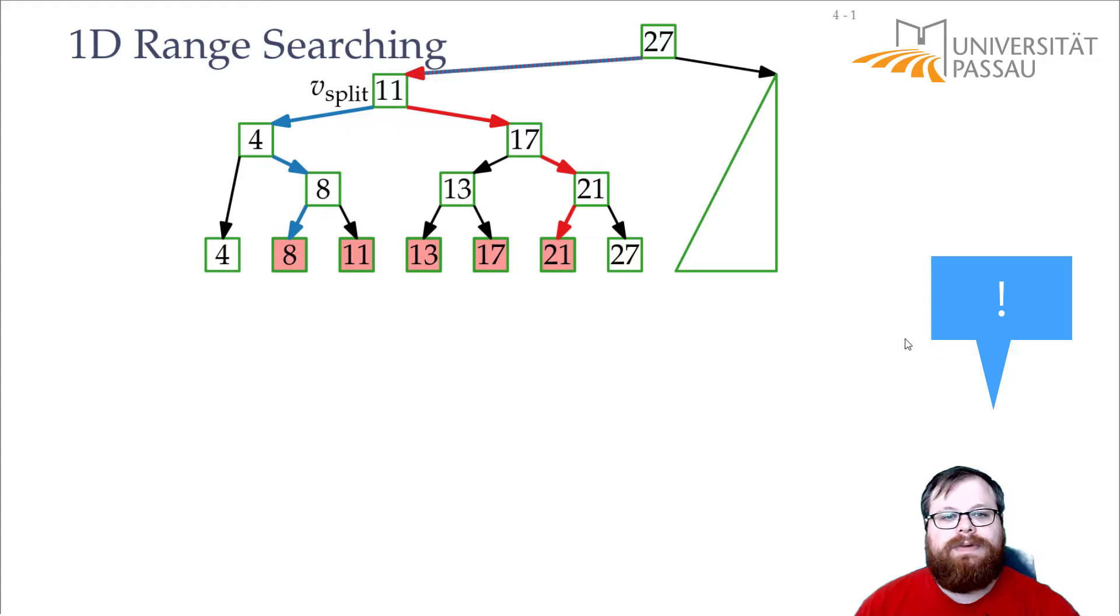And for that I want to use one observation. So if we look at this, we split, and we keep walking along this path. Whenever my blue path goes to the left, I have to take everything that lies in the right subtree. Whenever my red path goes to the right, we know that everything in the left subtree we will have to report.